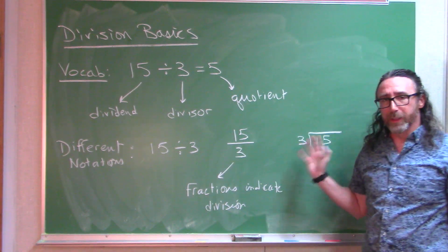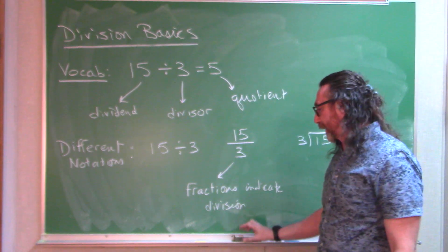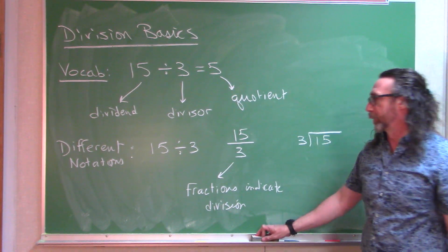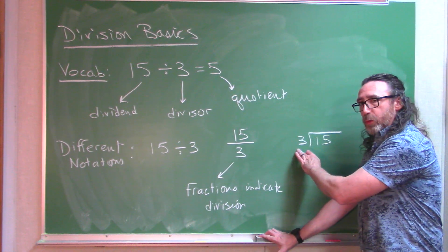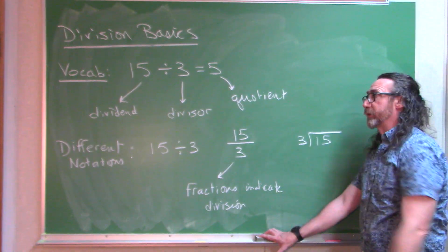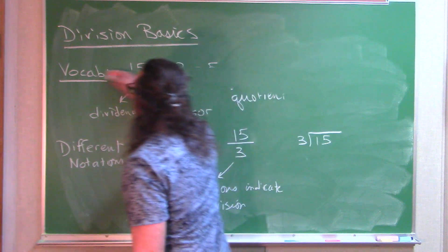So all these things are indicating the same operation of doing 15 divided by 3. Note here the divisor goes on the outside. We're taking 3 and dividing into 15.